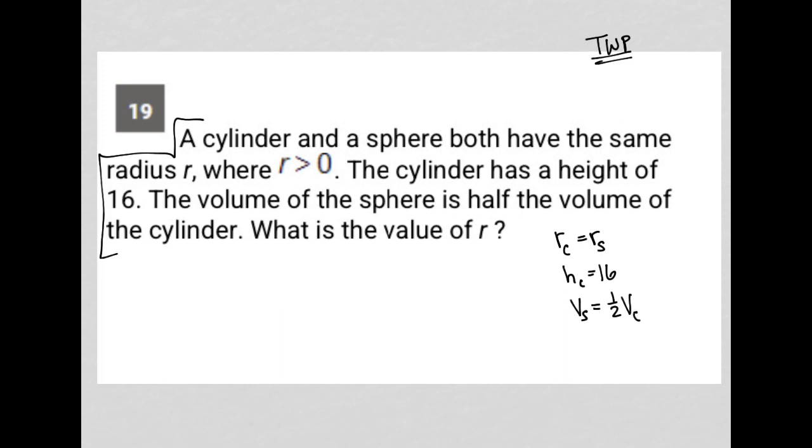Now there's some things that I know. I know from the first page of the math section that the volume of a sphere is equal to four-thirds pi R cubed. I also know from the first page of the math section, so I don't have to memorize it, that the volume of a cylinder is equal to pi R squared H.